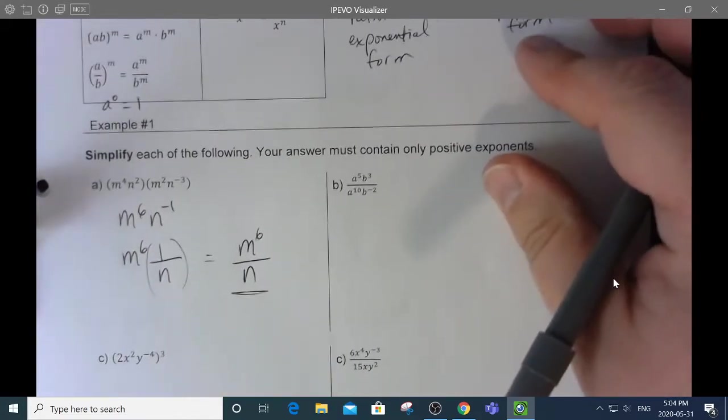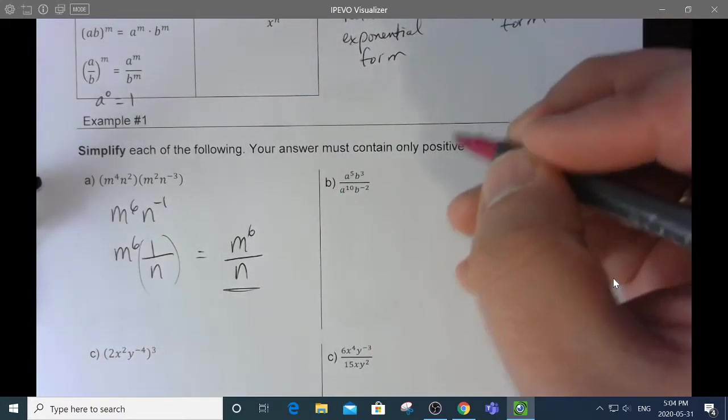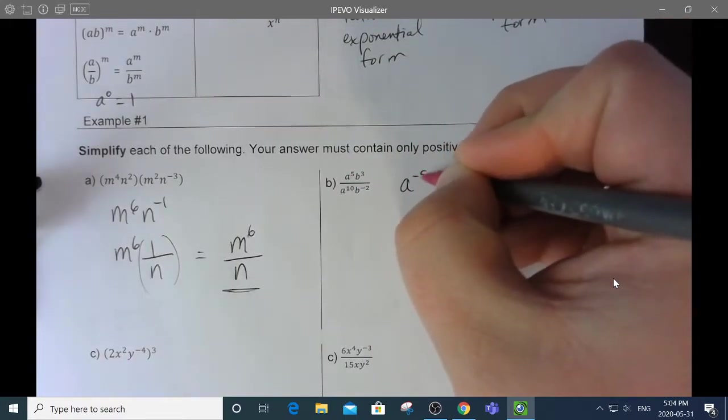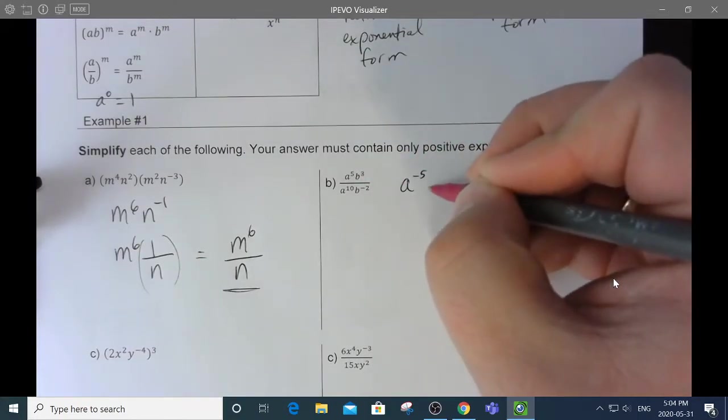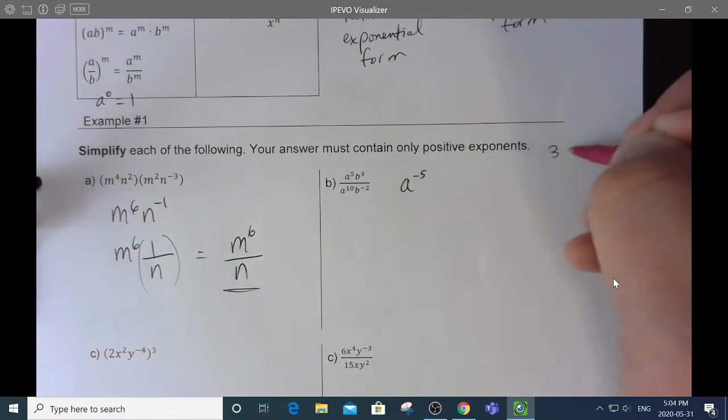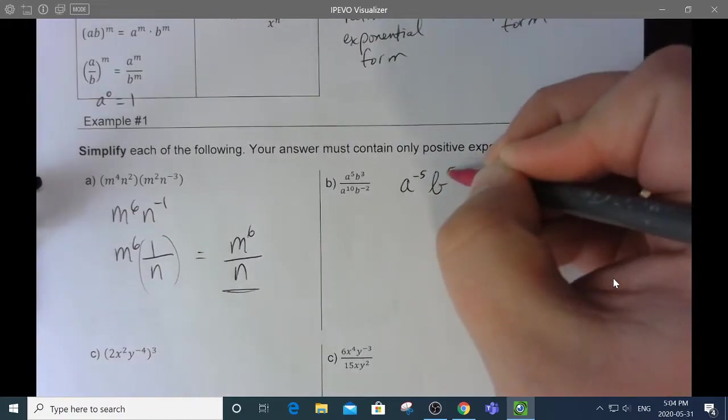Let's look at b. I have a to the 5 divided by a to the 10, which is a to the negative 5. And I have b to the 3 divided by b to the negative 2, which is b to the 3 minus negative 2, which is b to the 5.